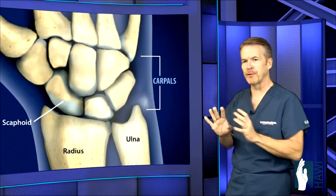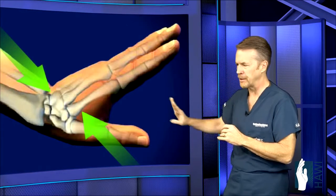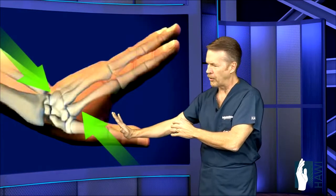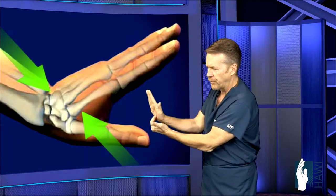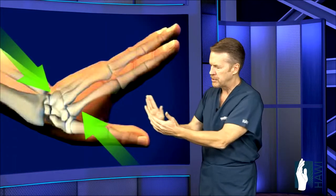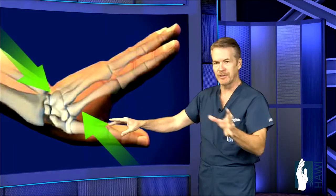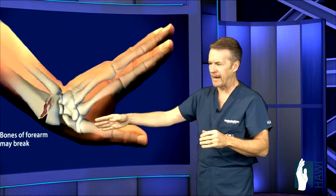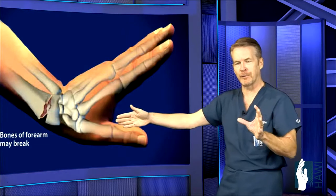Let's look at the mechanism of injury for a distal radius fracture or a scaphoid fracture. A fall on an outstretched wrist, forces going up as you can see here through the palm, shearing or pushing the wrist backwards. And as you can see here on this next slide, let's look at an actual Colles' fracture or a distal radius fracture.